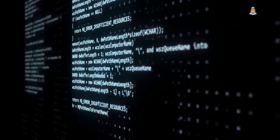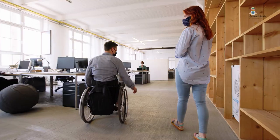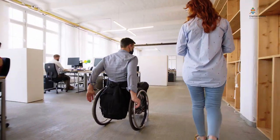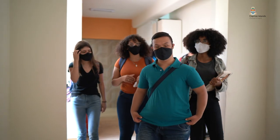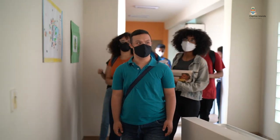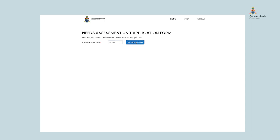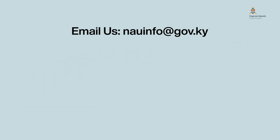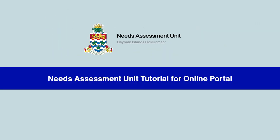You are now able to submit your application form to the NAU for review. If you do not click Submit, NAU will not receive the application and will not be able to review your request. Click the Submit button and your information will be submitted directly to the Needs Assessment Unit for processing. Upon reviewing, the NAU will confirm if you are eligible for financial assistance or reach out for more information. You should write down and keep the unique application number safe to facilitate future interactions with NAU. If you are having trouble with your application, please email us at nauinfo@gov.ky. Thank you.